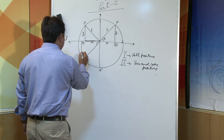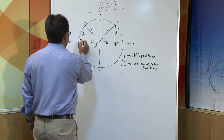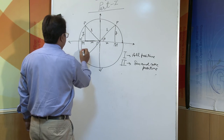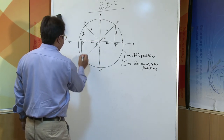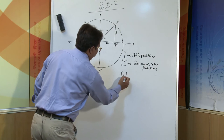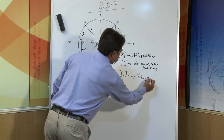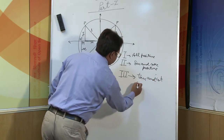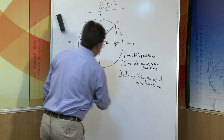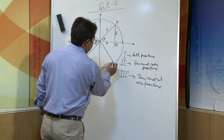In the third quadrant, the length OM' is negative and the length M'P' is also negative. When both are negative, and we find the ratios, the negatives cancel in tan and cot, so tan and cot are positive. The remaining four trigonometric ratios become negative in the third quadrant.